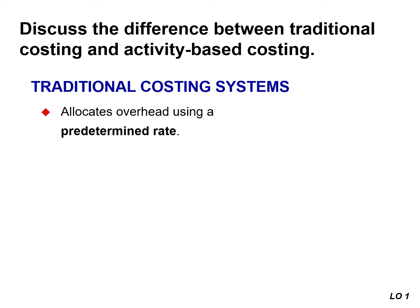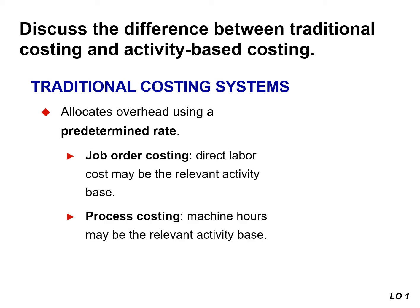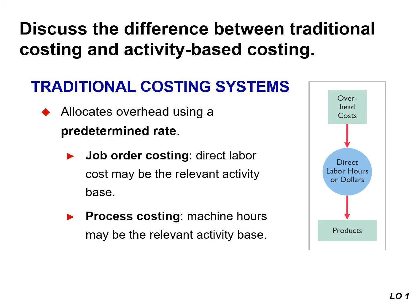In our coverage of job order costing and process costing, we used a single or plant-wide overhead rate called the predetermined overhead rate. For job order costing, we assumed that direct labor cost was the relevant activity base for assigning all overhead costs to the process or department. As illustrated, a traditional costing system may rely on just direct labor hours or cost to assign all overhead costs to a company's product.